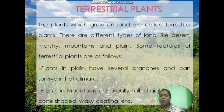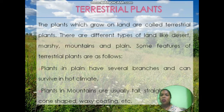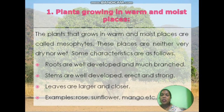Plants in mountains are usually tall, straight, and have a waxy coating. Terrestrial plants have been classified into different types because there are different types of land and terrain structures on the earth.